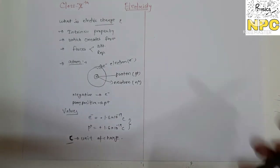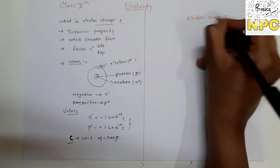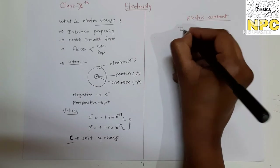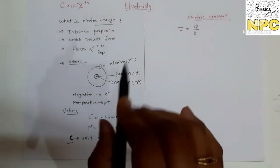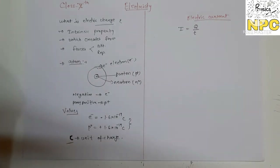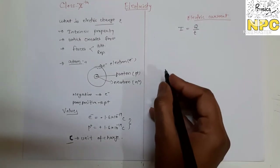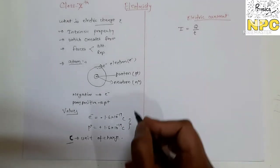Now we move to the main topic of electricity — electric current. Electric current, denoted by capital I, is the amount of charge flowing through a conductor in unit time. The formula is I = Q/T, where Q is the charge and T is the time. This can also be called the rate of flow of charge passing through a conductor.